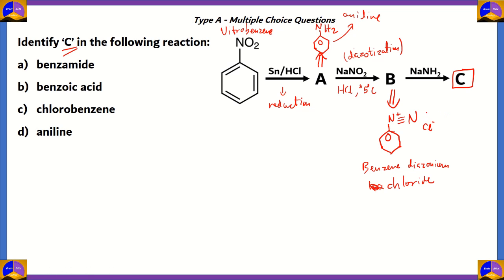Now, benzene diazonium chloride in the presence of NaNH2. So, in the presence of NaNH2 benzene diazonium halides return back to becoming aniline, which is NH2. So, therefore, our C product or the product C in this particular set of equations turns out to be option D aniline.